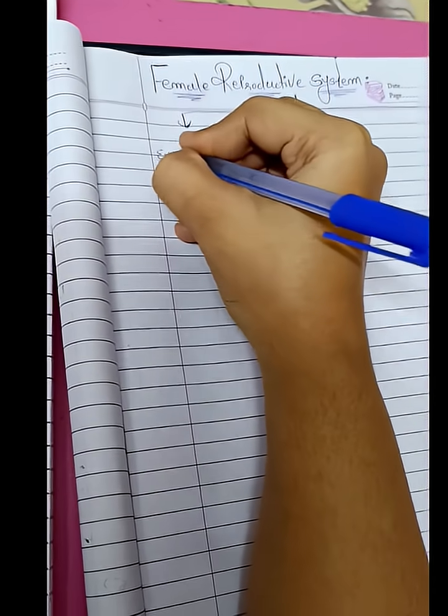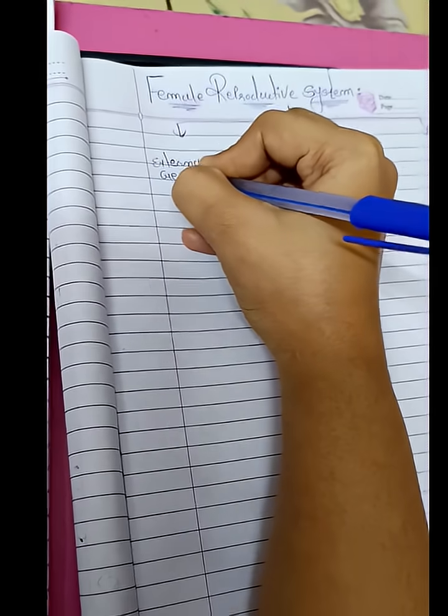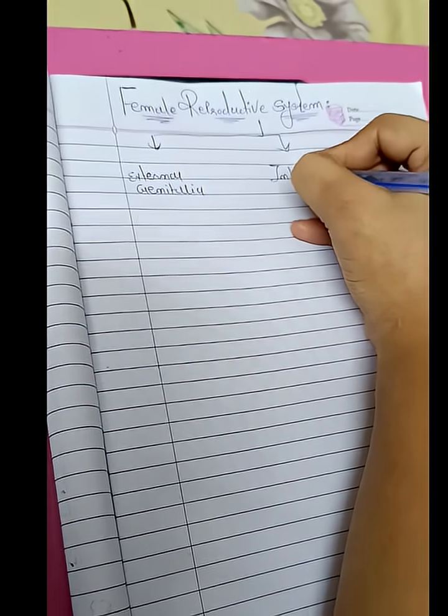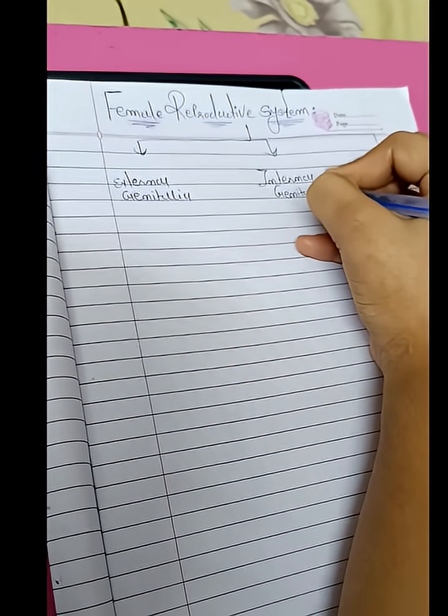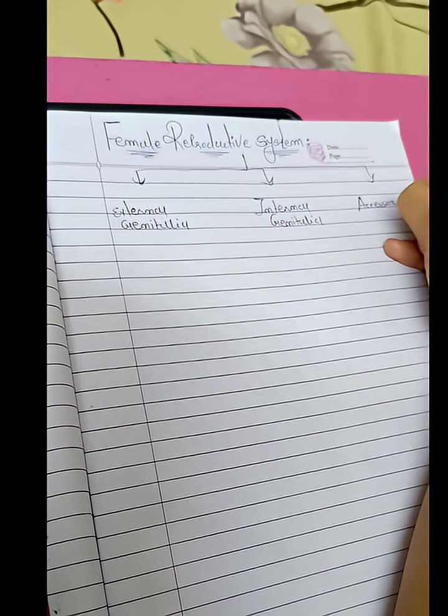First is external genitalia. Second is internal genitalia. Third is accessory organ.